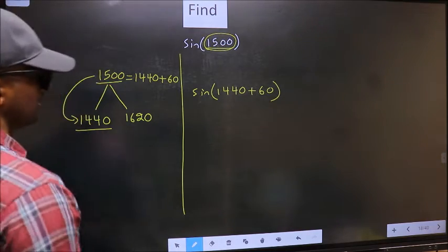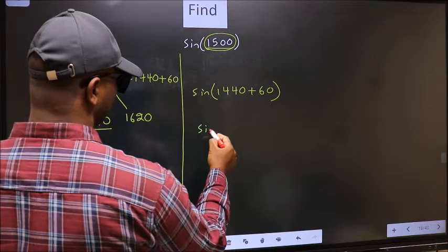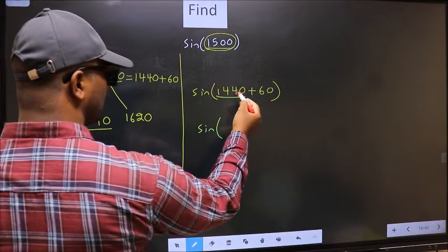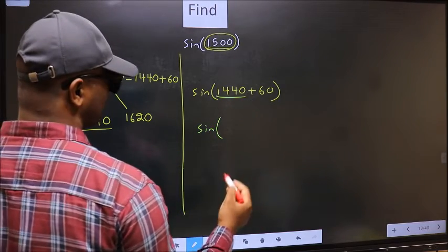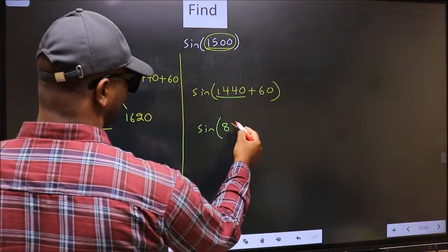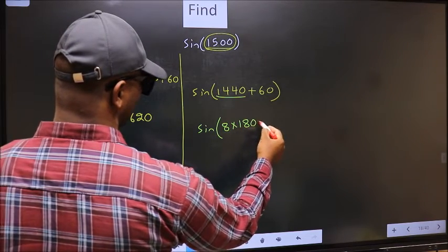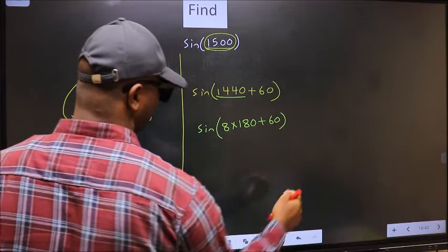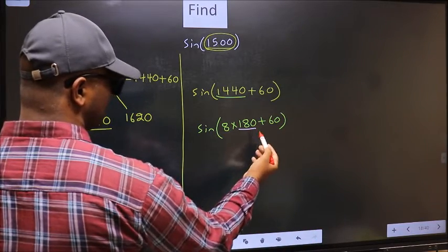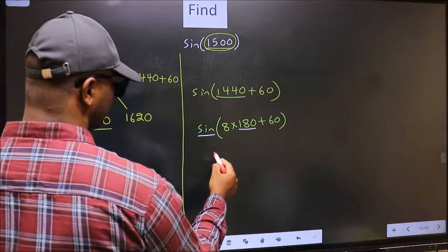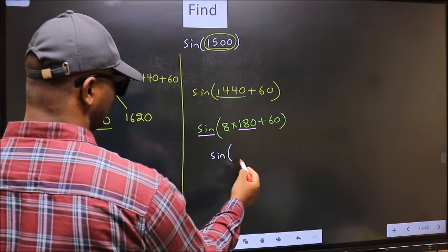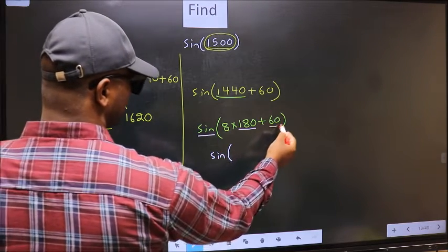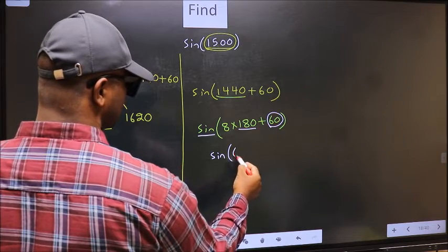Next, sine. In place of 1440, we should write 8×180 plus 60. Here we have 180, so sine is not going to change. It will remain sine. And inside, we get this angle 60.